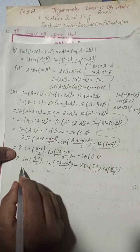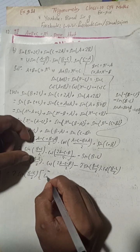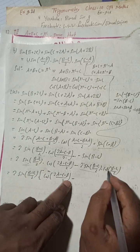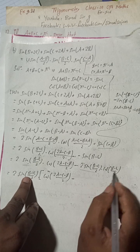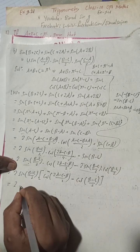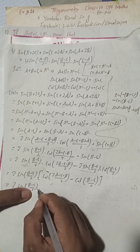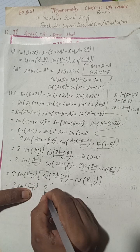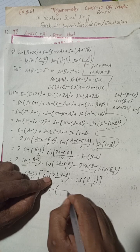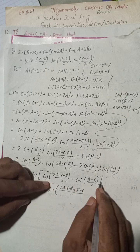Now applying the identity cos C − cos D = −2·sin((C + D)/2)·sin((C − D)/2) to the bracket: cos((2a − c − b)/2) − cos((b − c)/2). Here C = (2a − c − b)/2 and D = (b − c)/2. So C + D = (2a − c − b + b − c)/2 = (2a − 2c)/2 = (a − c), and we combine the 2 outside with this formula's 2 to get a factor of 4.